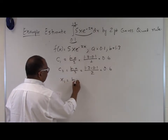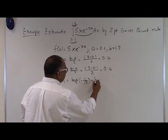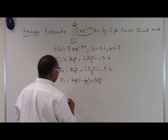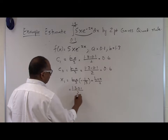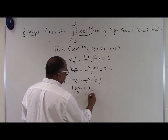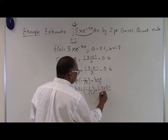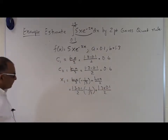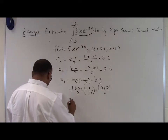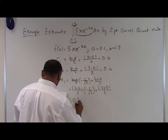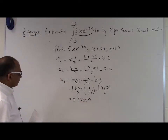x1 is (b minus a)/2 times (minus 1 divided by square root of three) plus (b plus a)/2. Substituting the values of a and b: (1.3 minus 0.1)/2 times (minus 1 divided by square root of three) plus (1.3 plus 0.1)/2. That number turns out to be 0.35359. That's the value of x1.